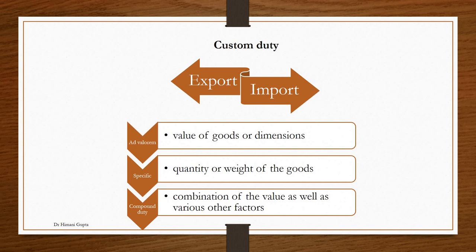The last is compound duty, which is a combination of value as well as other factors — there are duties where tax is levied both on the value of goods plus some fixed amount. So those were the three types of taxes under the central government: custom duty, service tax, and excise duty tax. Now we will study taxes collected by the state government.